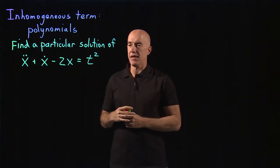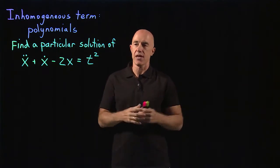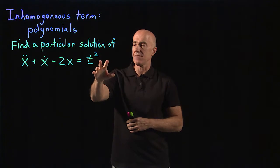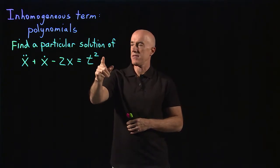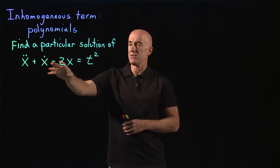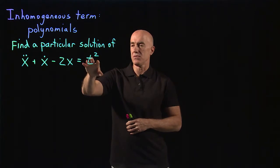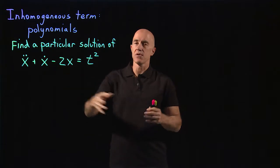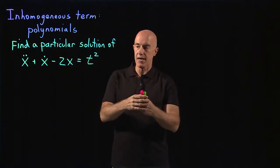So following the idea of exponential function, sine and cosine, at first you would look at a constant times t squared. But in this case, the derivatives will end up giving you t's and constant terms. So you need to include those in your ansatz also.